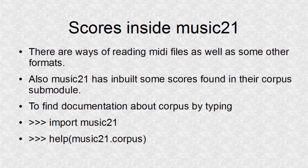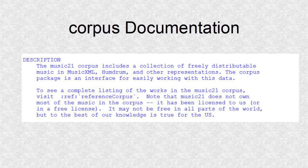There are many scores available in Music21. They are included in the sub-module corpus. These are the two statements to get documentation on corpus. This is part of the documentation returned by Python. As you can see, the corpus contains some freely distributable scores.